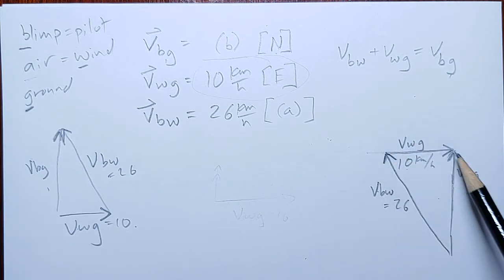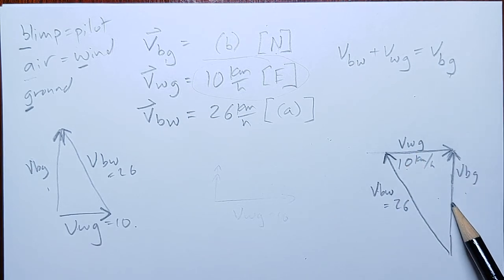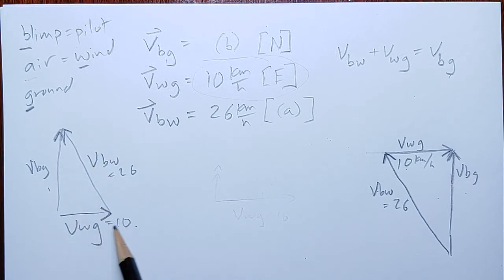So, bw and wg connected tip to tail. bg goes tail to tail, tip to tip, is the resultant. Same thing over here. bw and wg are connected tip to tail. bg is my resultant.